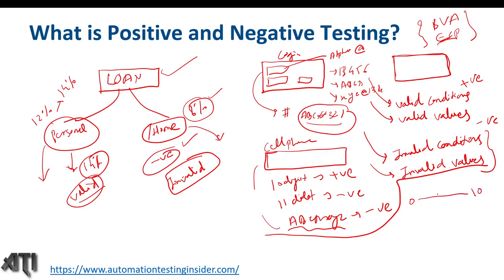For an input field taking numbers from 0 to 10, the boundary values are: -1, 0, 1 at the lower boundary and 9, 10, 11 at the upper boundary. Negative test cases are -1 and 11 — the field should not accept these. Positive test cases are 0, 1, 9, and 10, which are within the valid range.